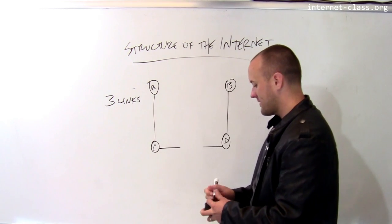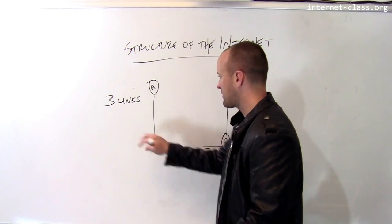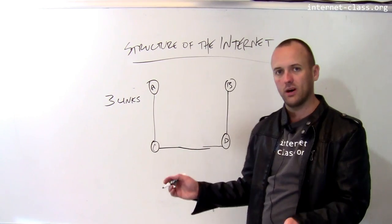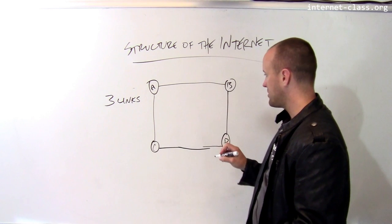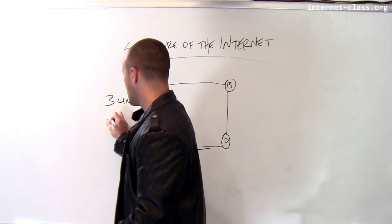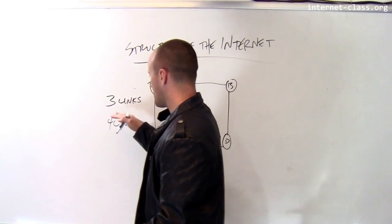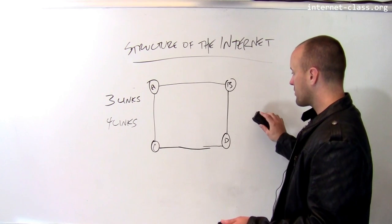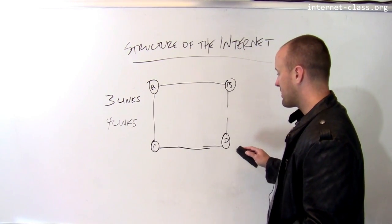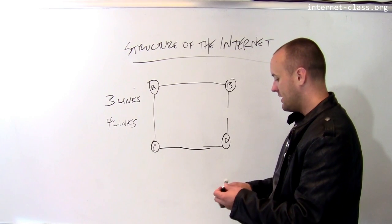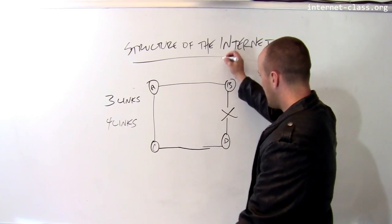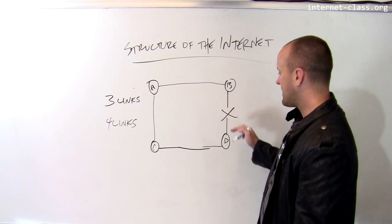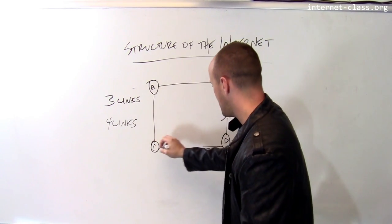If I want to make this network more robust, I have to spend more to build more links between the computers. Let's say I want to tolerate the loss of one link. If I establish a new link up here, this network now has four links — more expensive than the cheapest network, but also more robust. This network can now tolerate the loss of one link. For example, if this link goes down, B would normally talk to D directly, but if this link is severed, B can still talk to D by routing through A, C, and over to D.